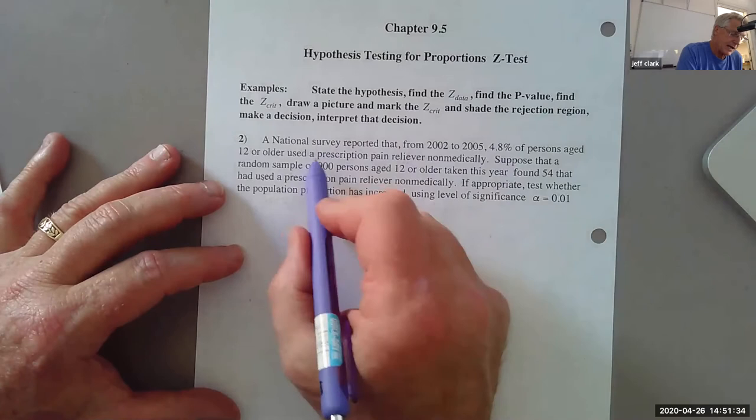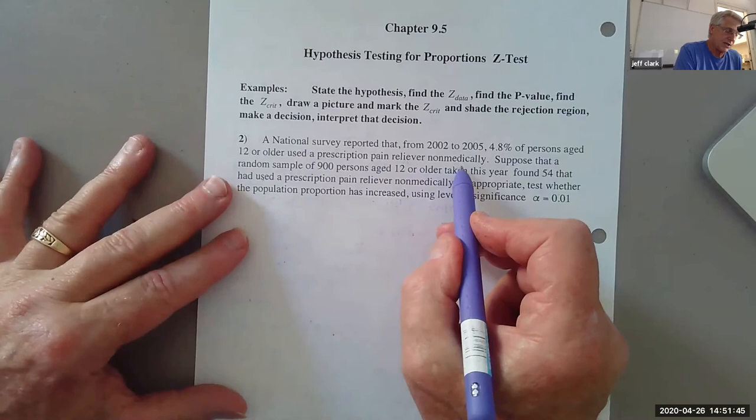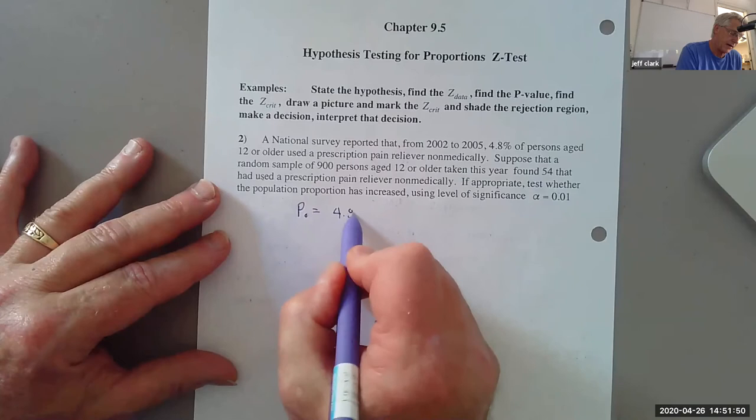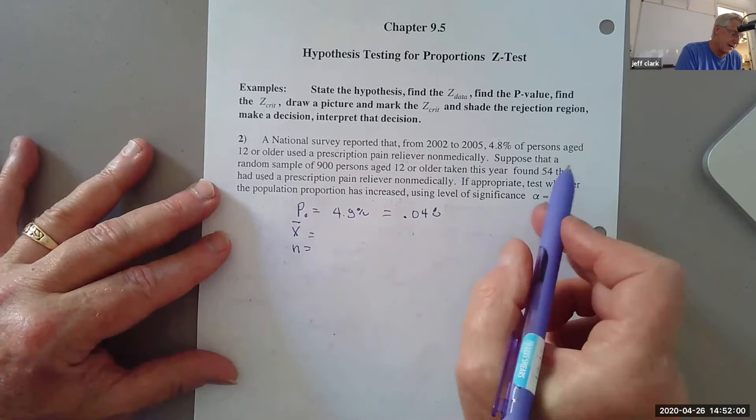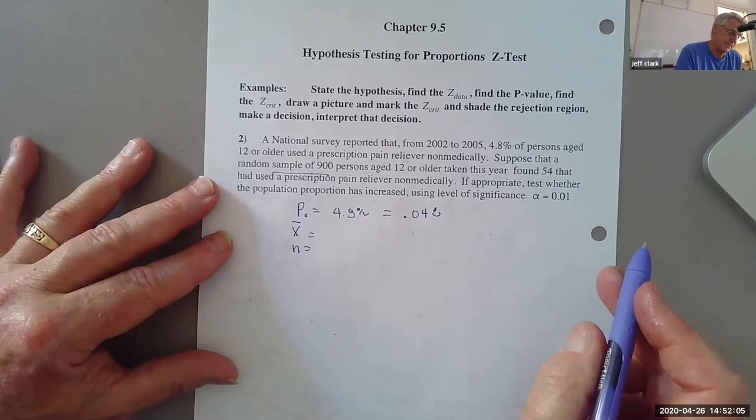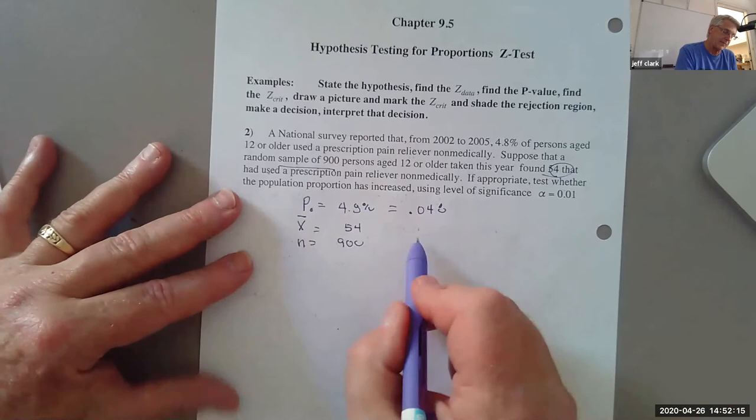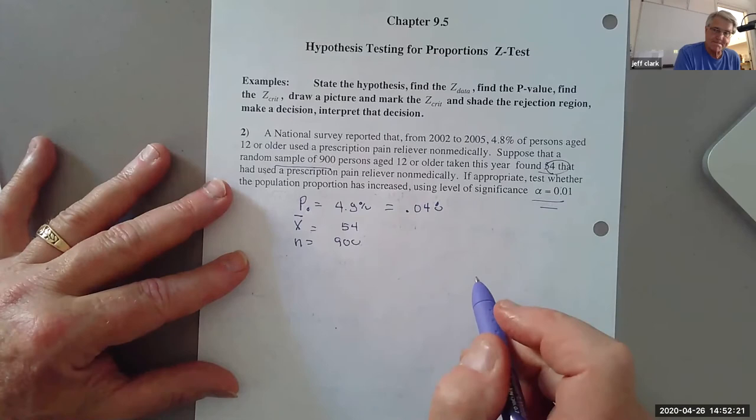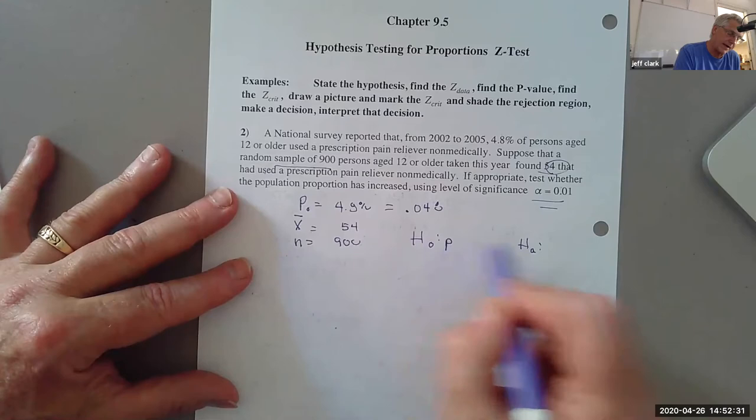Let's see. A national survey reports that between this time frame, 4.8% of persons age 12 or older use the prescription pain reliever. So, that looks like my P naught is equal to 4.8%. Let's change that to a decimal 0.048. Looks like I might need an X. I might need an N. All right. It looks like a random sample is going to be 900. And 54 was my X. And I'm going to have a, let's see, alpha is 0.01. What else do I need? I'm going to have a hypothesis test. And because it's the proportion instead of a mu, we have a lowercase p and we think it has increased.